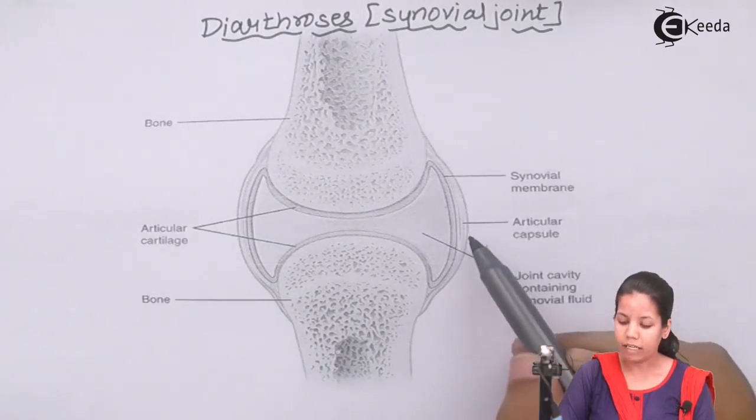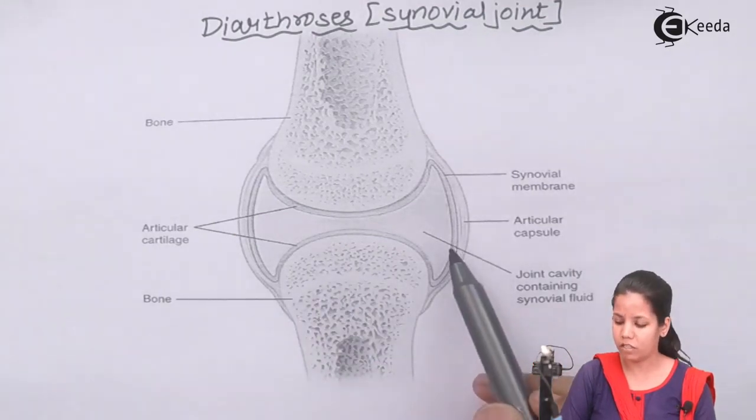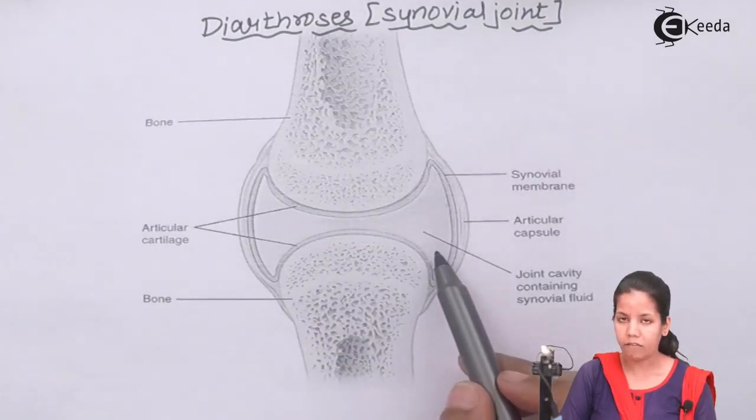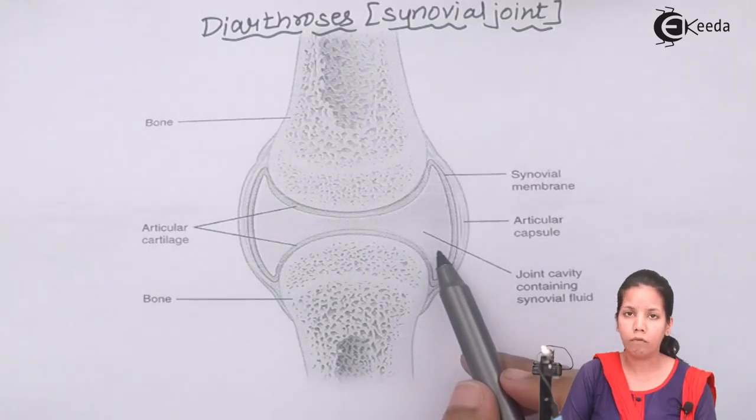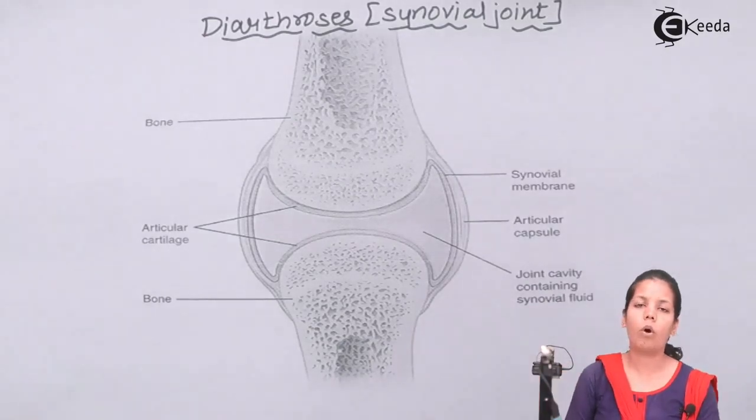This is the articulating capsule. In this region, the articulating capsule provides rigidity. The synovial cavity will consist of synovial fluid that will contain phagocytic cells that will ultimately kill the microorganisms.